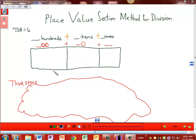I already have my rectangle drawn and sectioned off so that I'm ready to do the place value section method for division. I'm going to write this divisor, which is 6, along my vertical side of my place value section model. I'm going to write the 738 inside of this particular box.